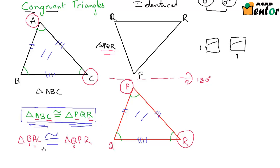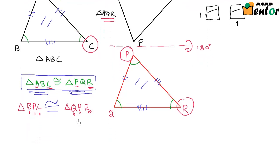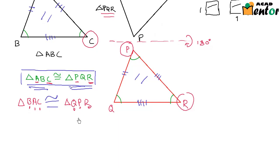And C corresponds to R — that is how two congruent triangles are named. Another thing to keep in mind is that the corresponding parts of congruent triangles are equal to one another.